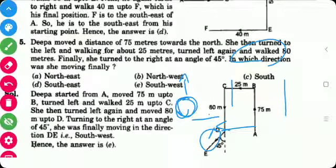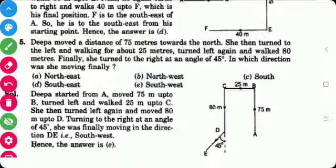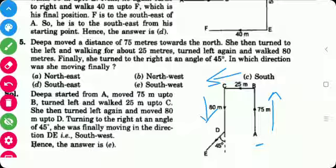Next problem is Deepa moved a distance of 75 meters in the north. Here is Deepa and he walks 75 meters in the north. He then turned to the left and about walked about 25 meters. He turned left again and walked 80 meters. Finally she turned to the right at an angle of 45 degrees. So this is the 45 degree angle.